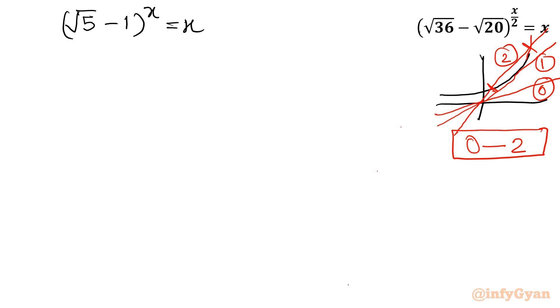I will consider this one as root 5 minus 1. I am changing its base. How I can change? Root 5 minus 1. So I can write e raised to the power ln root 5 minus 1.